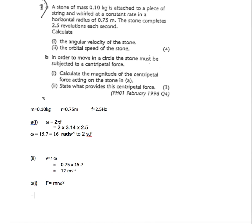So let's use F equals mr omega squared. We could have used mv squared over r. So F equals the mass which we said was 0.10 times the radius which was 0.75 times omega which we said was 15.7.